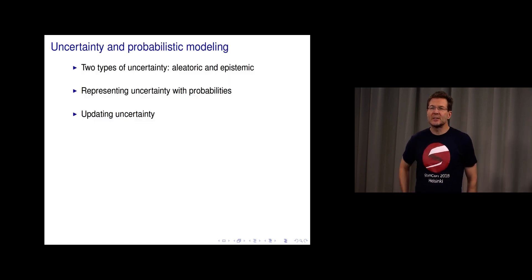In this video clip I'll talk about two types of uncertainty, aleatoric and epistemic, a little bit about representing uncertainty with probabilities and how to update uncertainties.